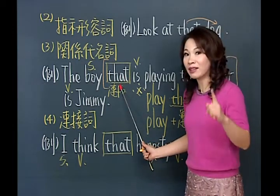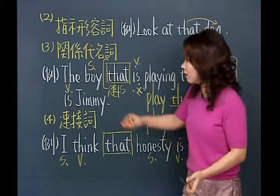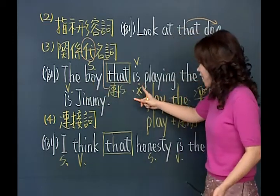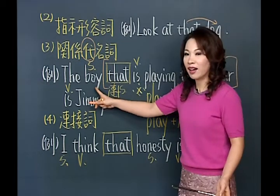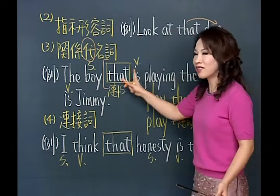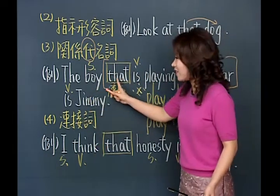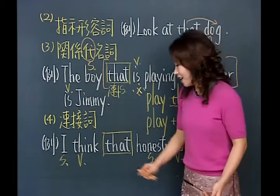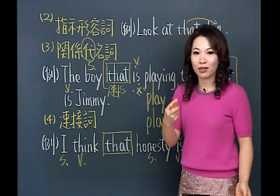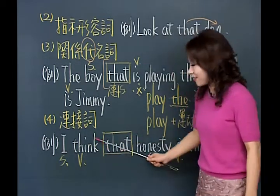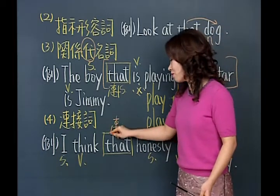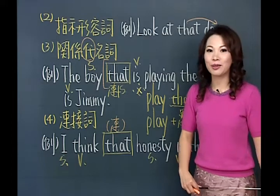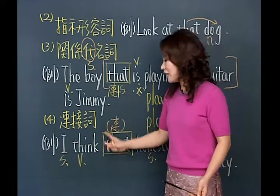我们来看这两个that为什么词性不一样。这句话：主词I，动词think，再来honesty是主词，is是动词，两个主词两个动词，所以that是连接词。有的同学说跟刚才一样，所以是关系代名词？不对！关系代名词是代名词，要代替名词。请问这里的that代替哪一个名词？think是动词，没有可以代替的名词，所以它只是纯粹连接两个主词两个动词的连接词。